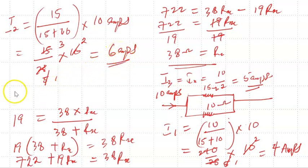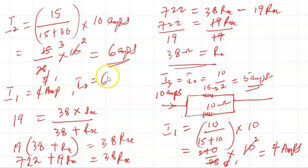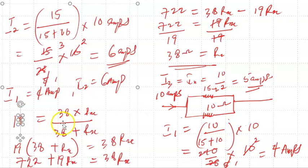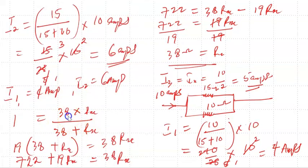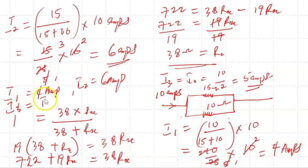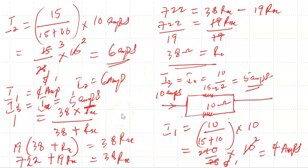With this, we've solved the question: I1 is 4 amps, I2 is 6 amps, and I3 equals Ix equals 5 amps. I hope you understand this. If you have any questions or challenges, please use the comment section. Thank you for staying with us and see you in the next class.